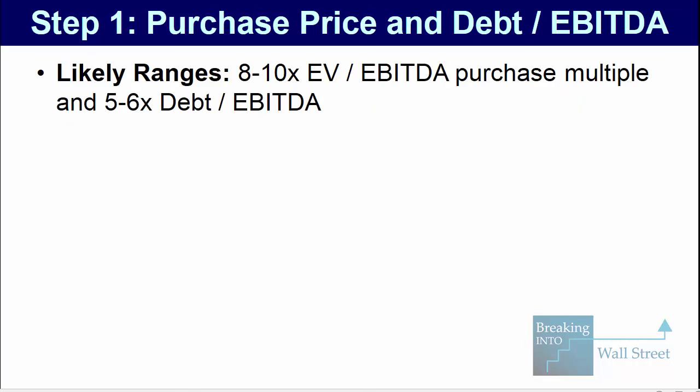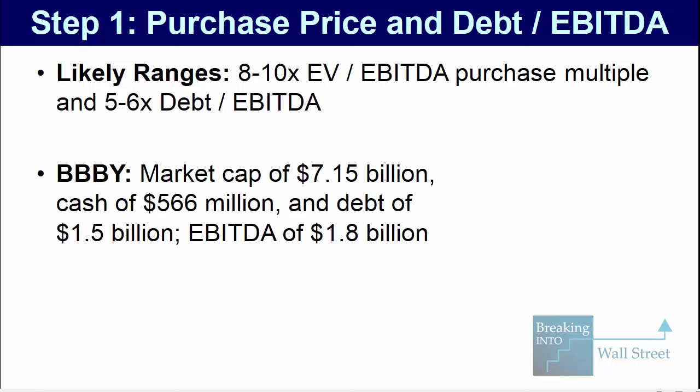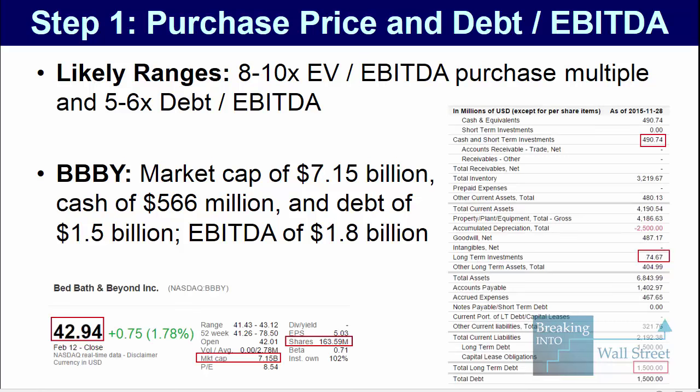Going back to those numbers, it seems likely that the purchase multiple will be around 8 to 10 times EBITDA, and the amount of debt will be around 5 to 6 times — our initial guess for this sector. Now Bed Bath & Beyond has a market cap of around $7.2 billion, cash of $500 to $600 million, debt of $1.5 billion, and EBITDA of $1.8 billion. To get these numbers, I just went to Google Finance, looked up the company, and found everything right there — the recent balance sheet, income statement, and cash flow statement.